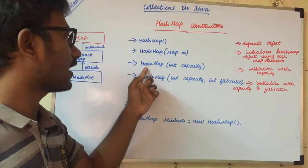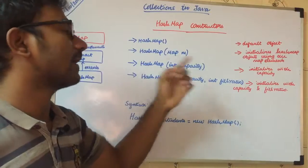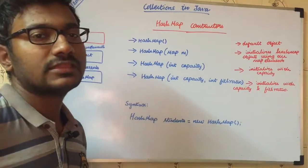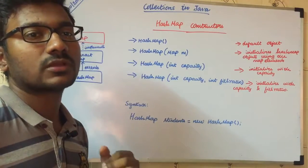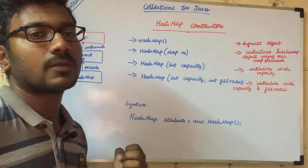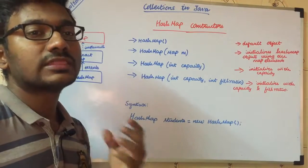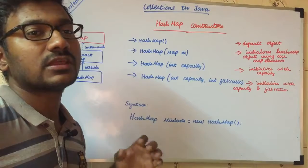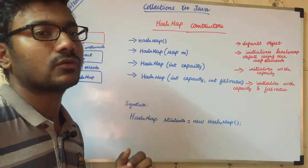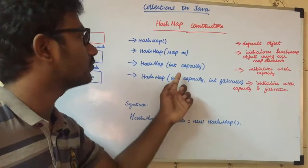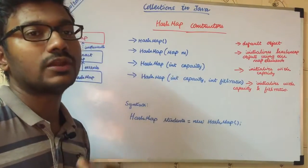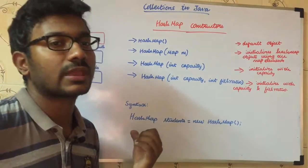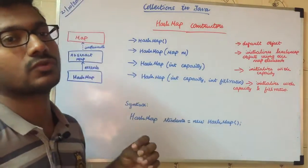Next, we call asMap(MapM). This is the same asMap(MapM) constructor. We already have the same asMap(MapM) available.